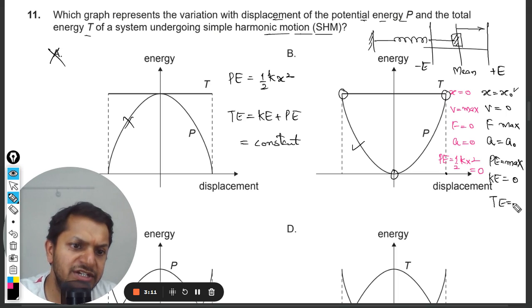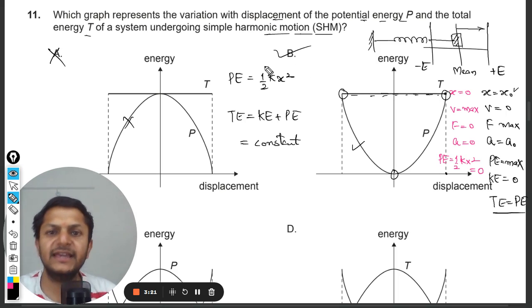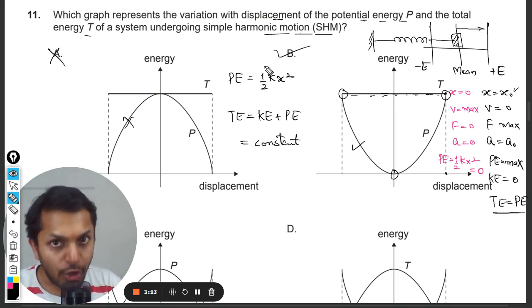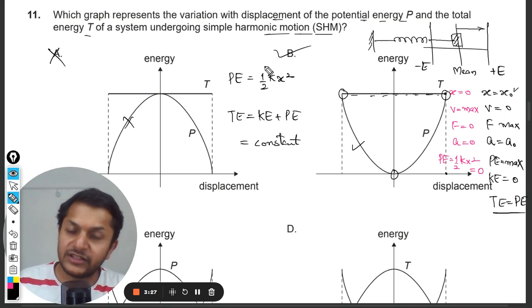So total energy is equal to potential energy. And the total energy does not change, so it is going to be constant. So my dear students, B is absolutely the correct option and I think that there should not be any doubt in this question.